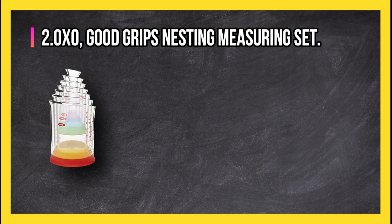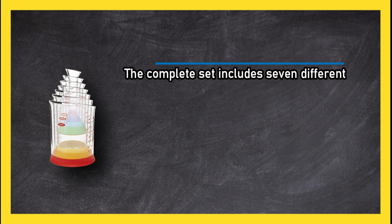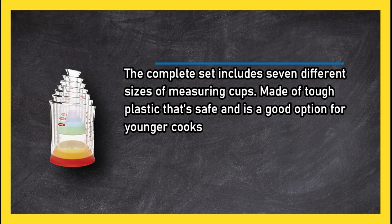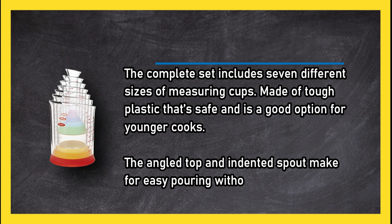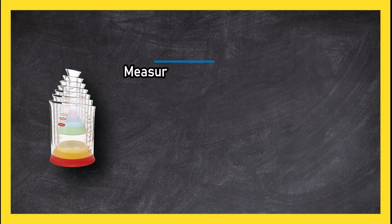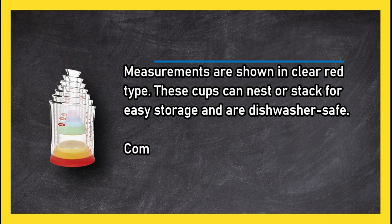The complete set includes seven different sizes of measuring cups made of tough plastic that's safe and is a good option for younger cooks. The angled top and indented spout make for easy pouring without messes. Measurements are shown in clear red type. These cups can nest or stack for easy storage and are dishwasher safe. Compact and comprehensive set. Small ones can be hard to clean.